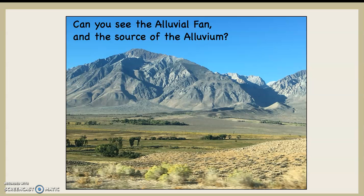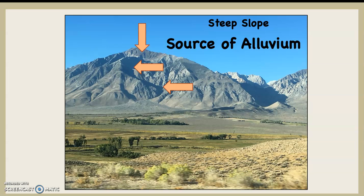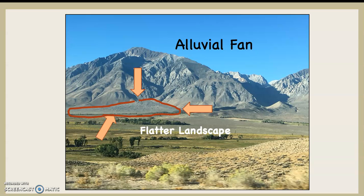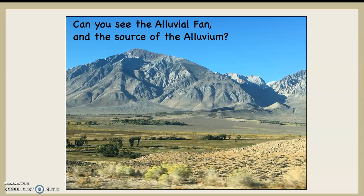Can you see the alluvial fan and the source of the alluvium in this photograph? This is the source of the alluvium — you can see that s-shaped canyon, and of course that landscape is steep coming down out of the mountain. The water runs down out of there, erodes the landscape, and then as it reaches that flatter valley floor it deposits all of that material, which is the alluvial fan circled in rust color with orange arrows pointing at it.